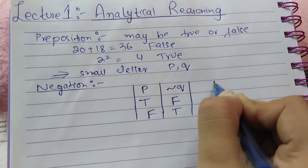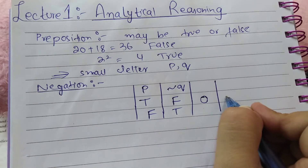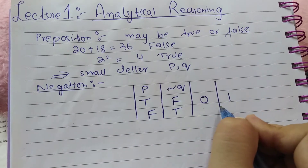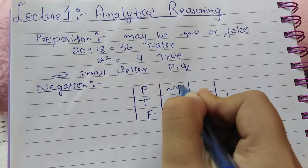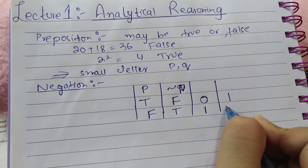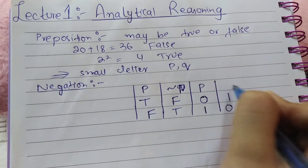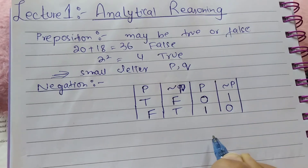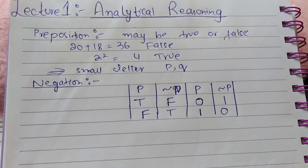In other words, if P is 0, negation of P will be 1. If P is 1, negation will be 0. This is the truth table of negation.